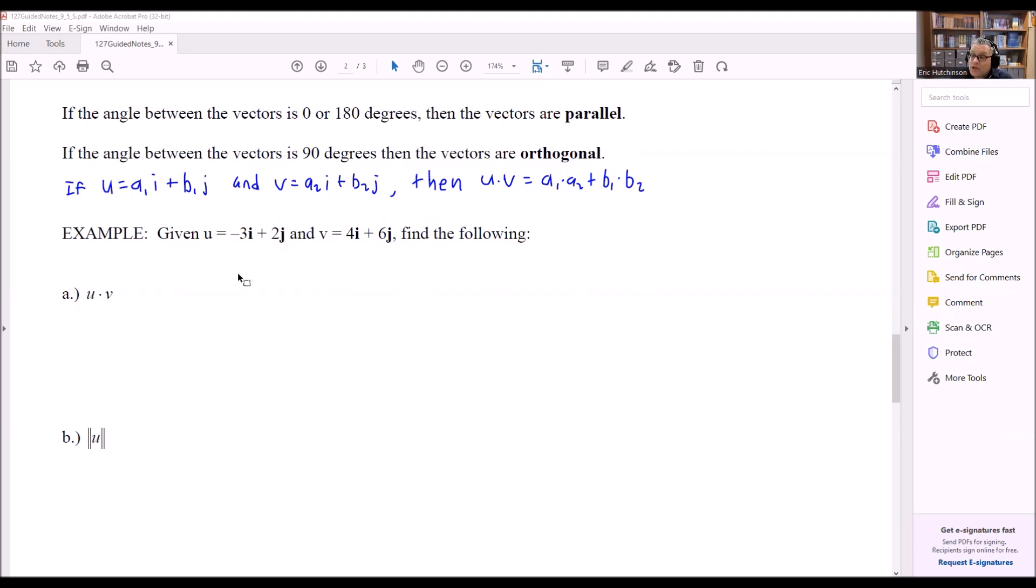So let's apply these formulas here. If u equals -3i + 2j and we have this one, the -3 is the a1 and this is b1 and this is a2 and this is b2. Keep in mind for this u times v, that's the u vector and the v vector.